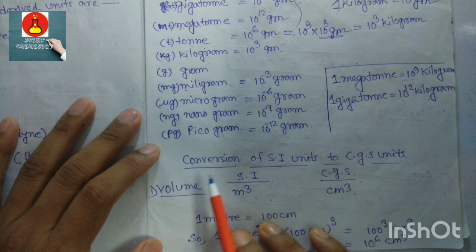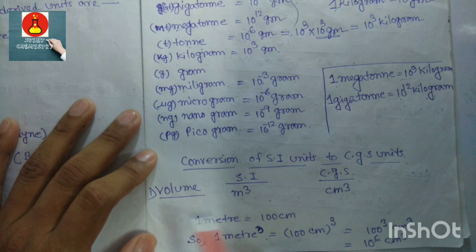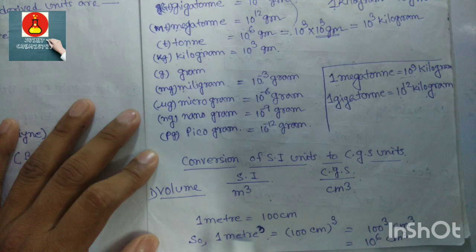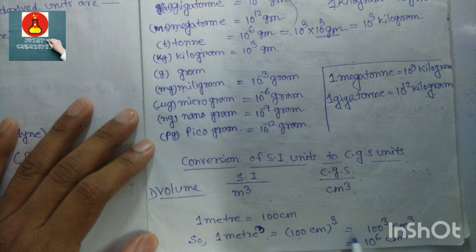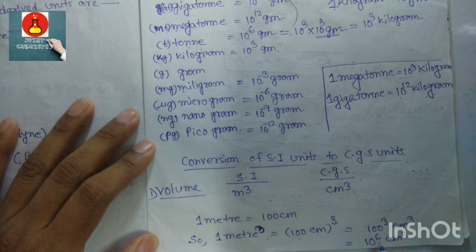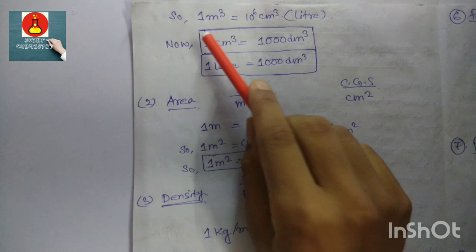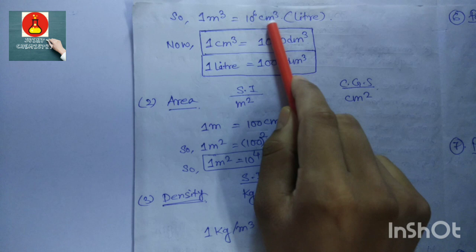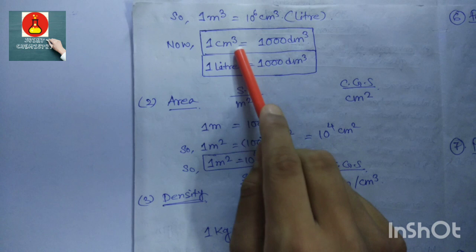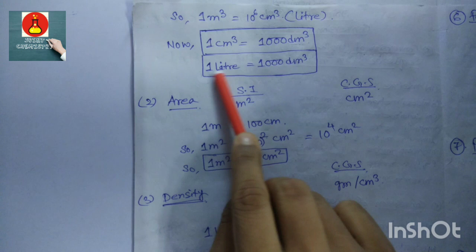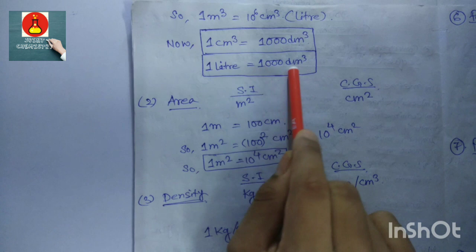Conversion of SI units to CGS units. Volume: SI unit is m³ and CGS unit is cm³. Since 1 meter equals 100 centimeters, 1 m³ equals (100 cm)³ equals 10⁶ cm³. One cm³ is also known as liter, and 1 liter equals 1000 cm³ — this is a very important and useful relation.